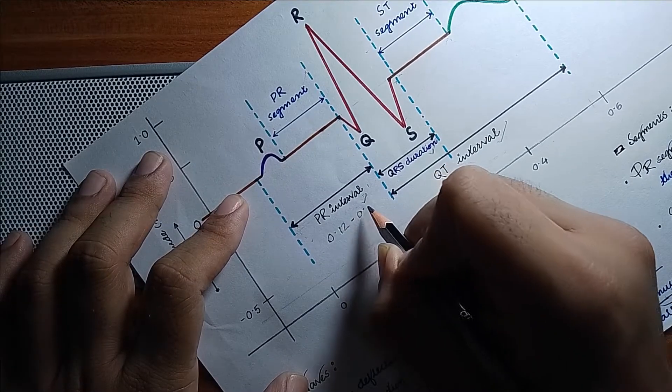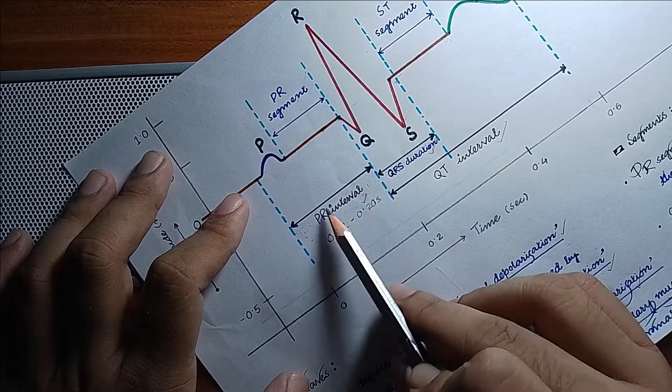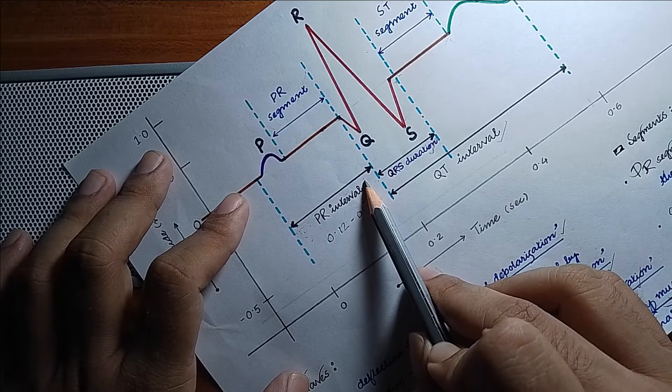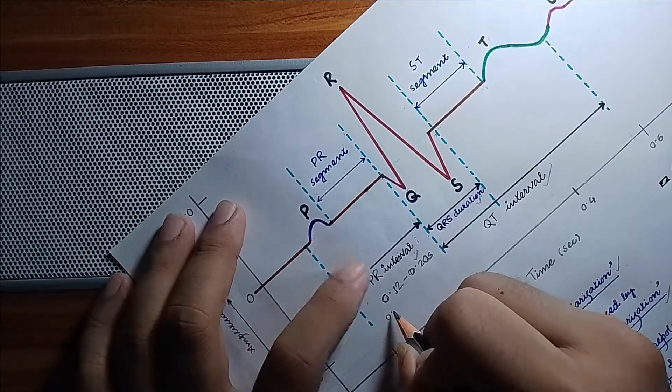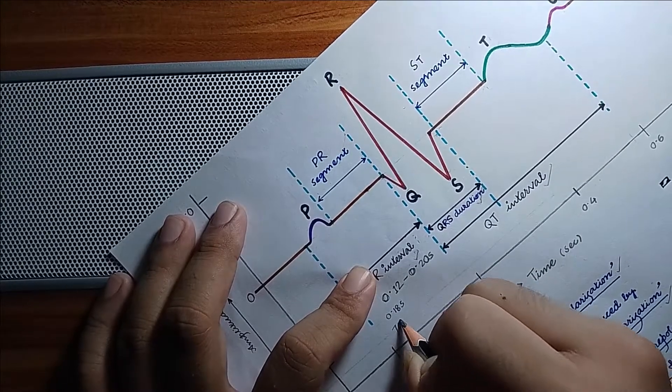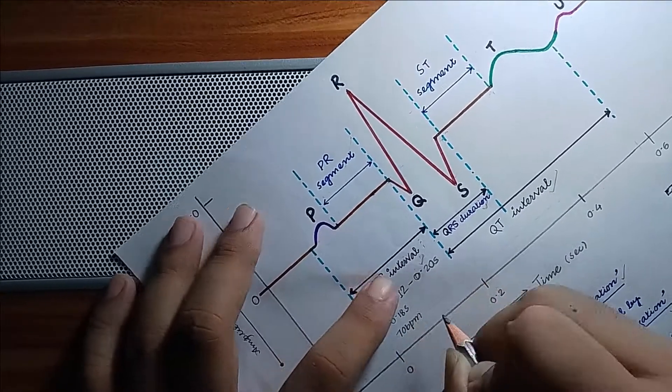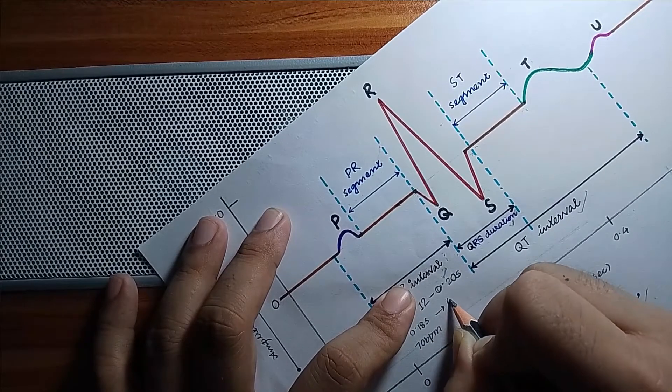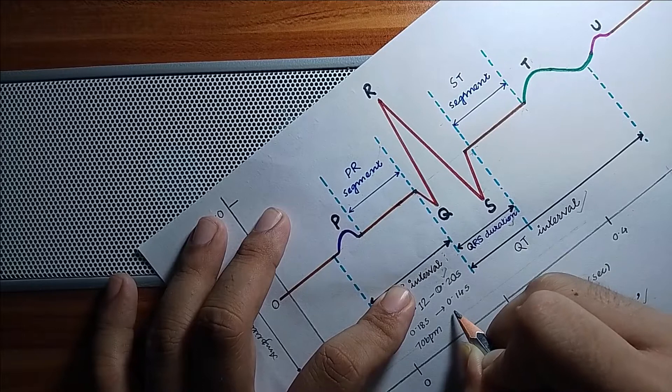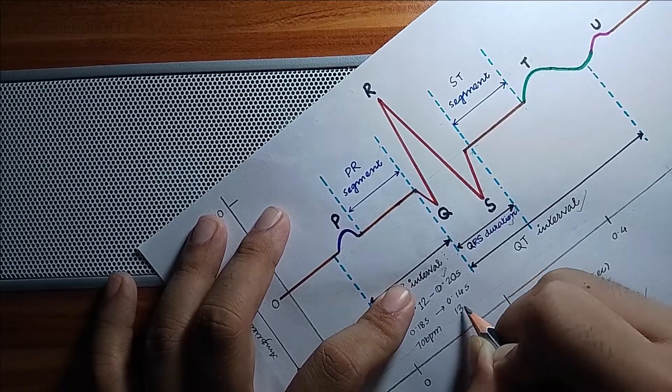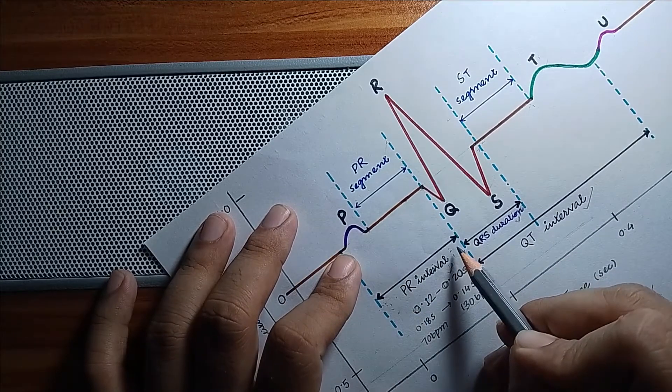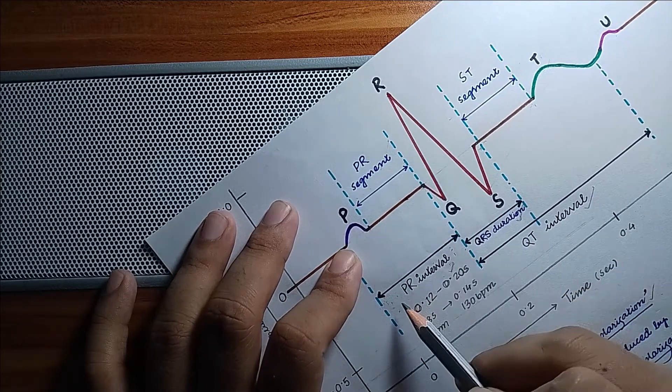This PR interval shortens as the heart rate increases, from the average of 0.18 second at 70 beats per minute to 0.14 second when the heartbeat is 130. The significance of PR interval is it represents atrial depolarization and conduction through the AV node.